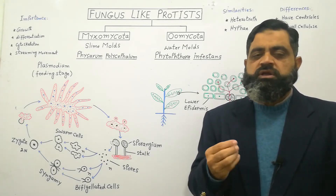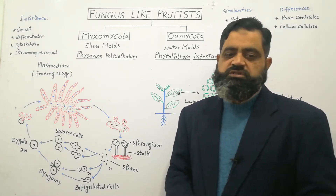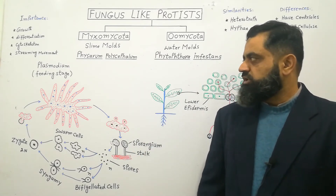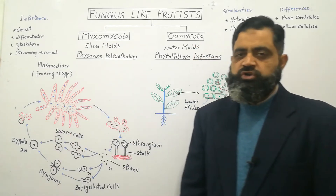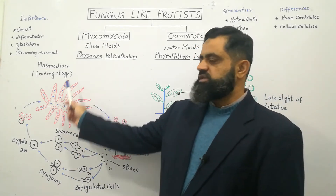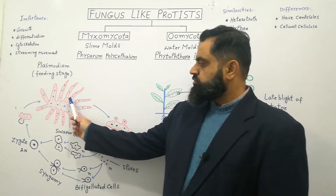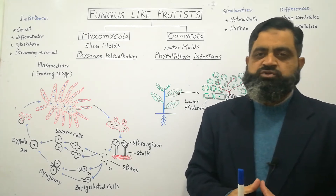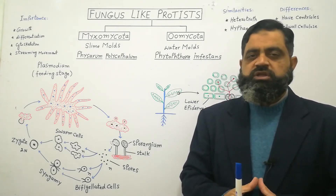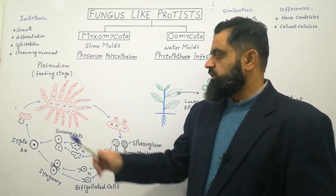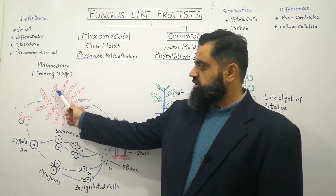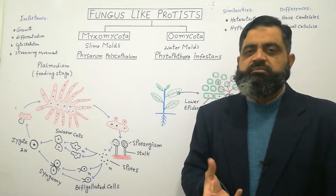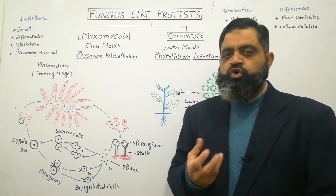Physarum polycephalum is the scientific name of the organism we are studying. Its plant body is known as plasmodium, which is also called its feeding stage. It is composed of multi-nucleate cytoplasmic projections — essentially a single-cell plant body but with multiple nuclei. Its cytoplasm streams over damp and decaying organic matter, logs, and litter.